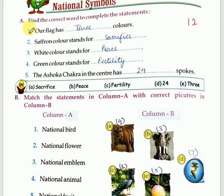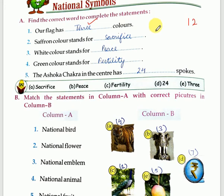First is: find the correct word to complete these statements. Our flag has how many colors? Three colors. Which colors are there? Saffron, white and green. Saffron color stands for sacrifice — the answer is sacrifice.